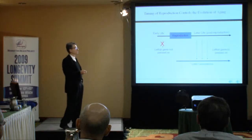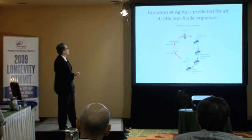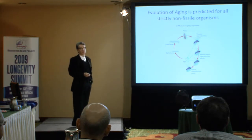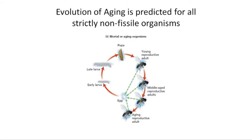Because I don't think there's anyone here over 95, so we're all aging. Evolutionary theory predicts aging in all cycling non-fissile organisms, and of course the most important organism is the fruit fly, Drosophila melanogaster. It is a classic mortal or aging organism. I'm just showing you this so some of the biology I'll be talking about will be a little bit concrete for you.